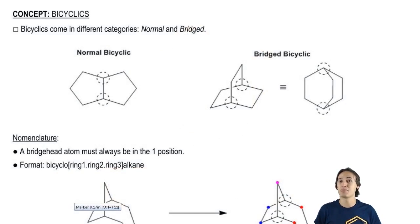As we talked about before, bicyclics basically come in two different categories. There's what I call the normal bicyclics, and that would be just one structure with two rings that are attached by one bond.